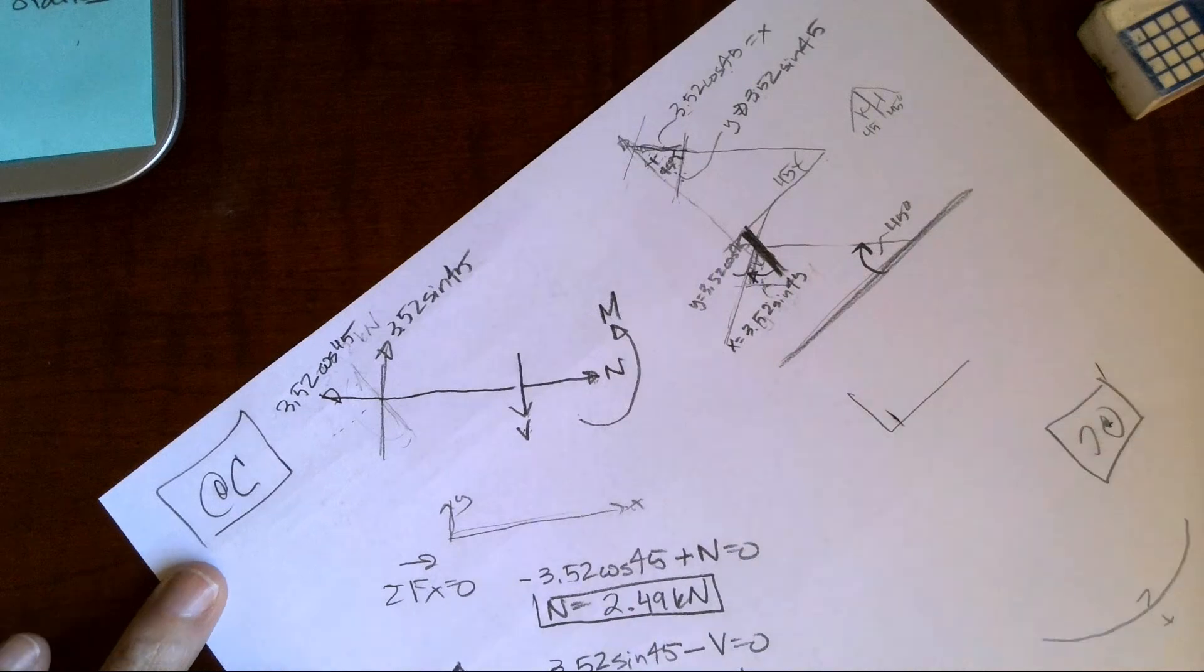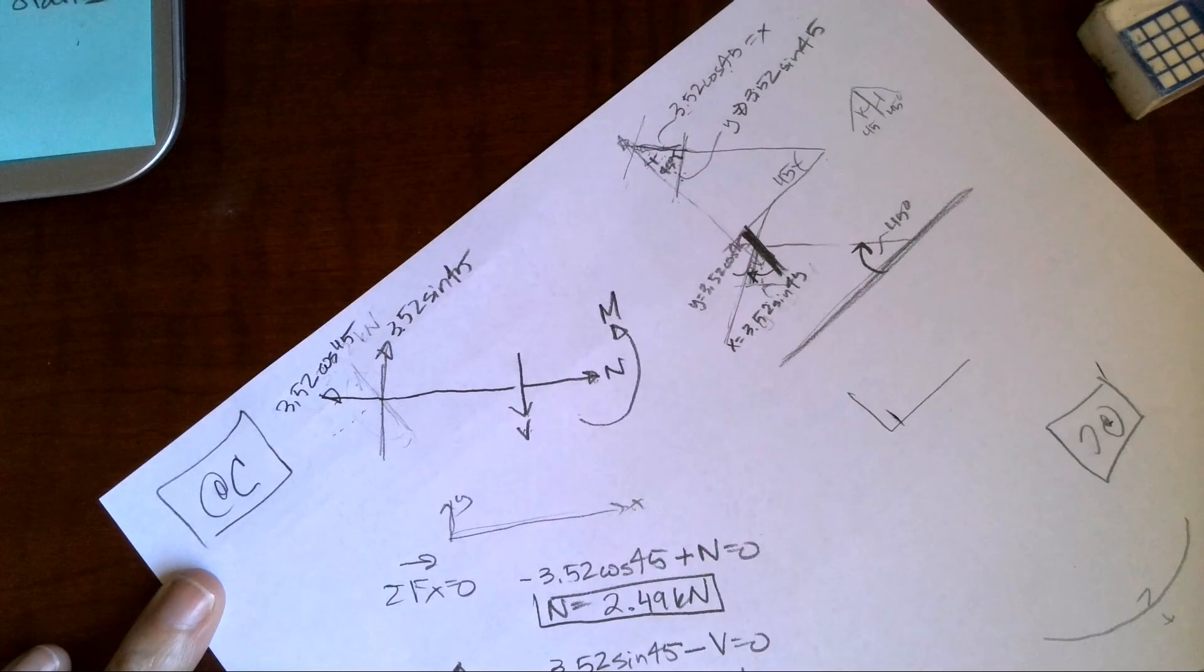How far down is C? I need to find my picture again. It looks like C is two meters down, so we can know that this is two meters.